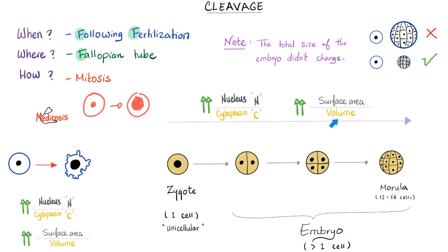Next, increased surface area-to-volume ratio. Look at this cell — did the volume inside the cell change? No, it's the same volume of cytoplasm. What changed is the surface area. These invaginations — crests and troughs — increase the surface area relative to the volume. And the nucleus also increased. So we have both increased nucleus-to-cytoplasmic ratio and increased surface area-to-volume ratio. Embryo is anything greater than one cell.